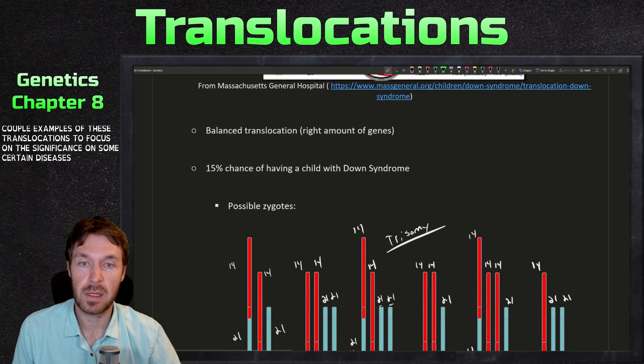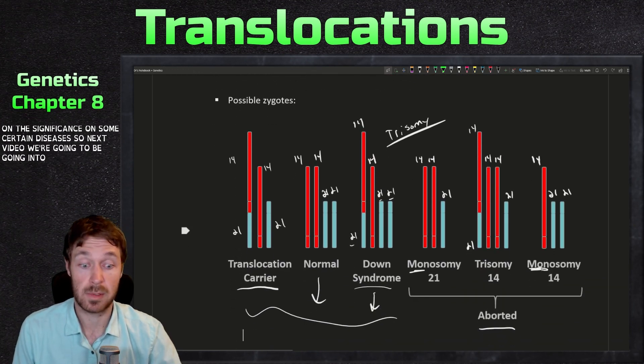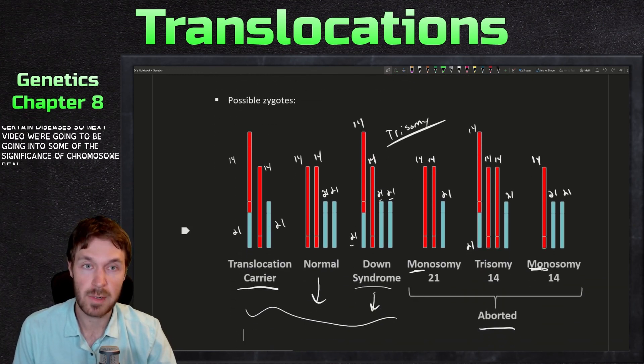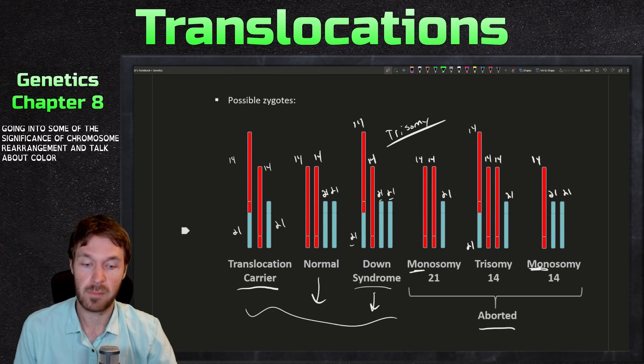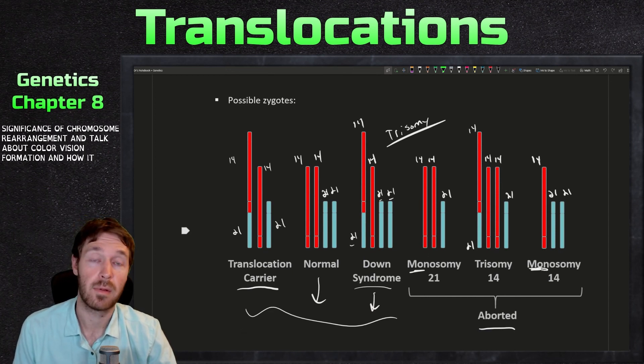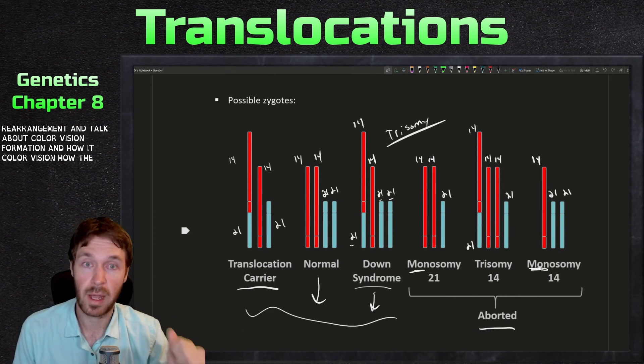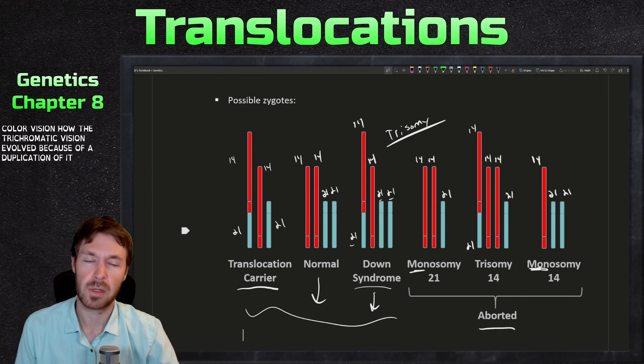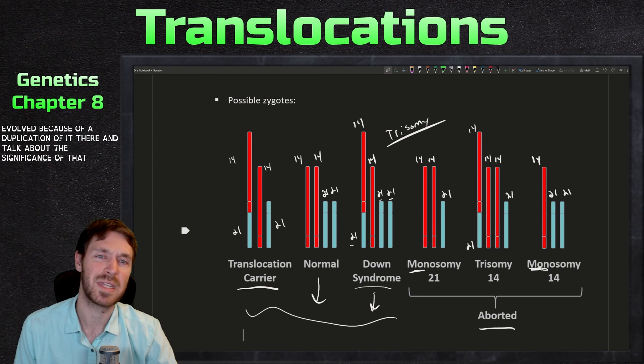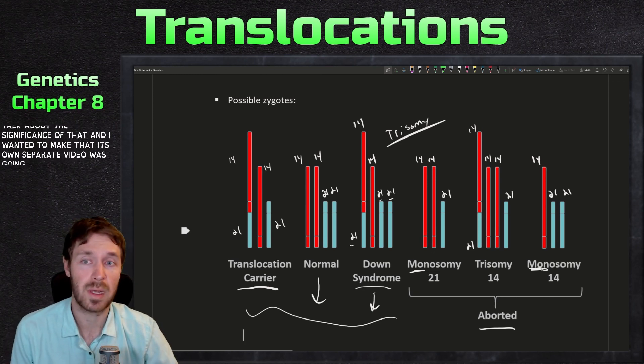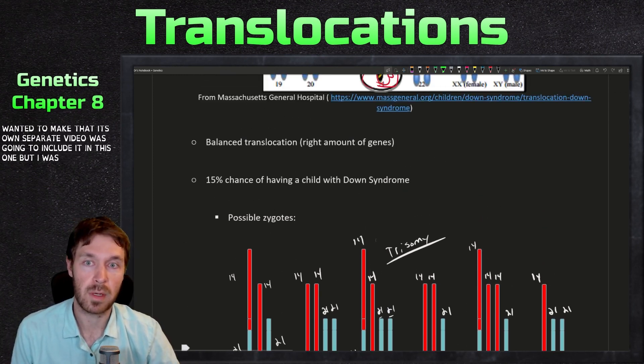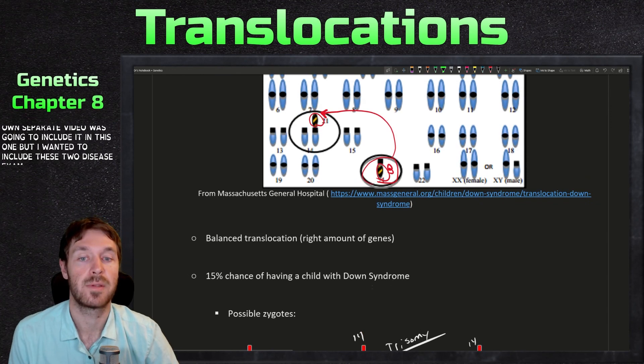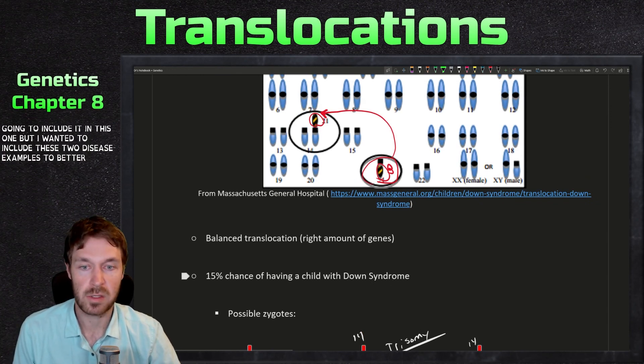So next video, we're going to be going into some of the significance of chromosome rearrangements and talk about color vision formation and how the trichromatic vision evolved because of a duplication event. We're going to talk about the significance of that. And I wanted to make that its own separate video. I was going to include it in this one, but I wanted to include these two disease examples to better understand these translocations.